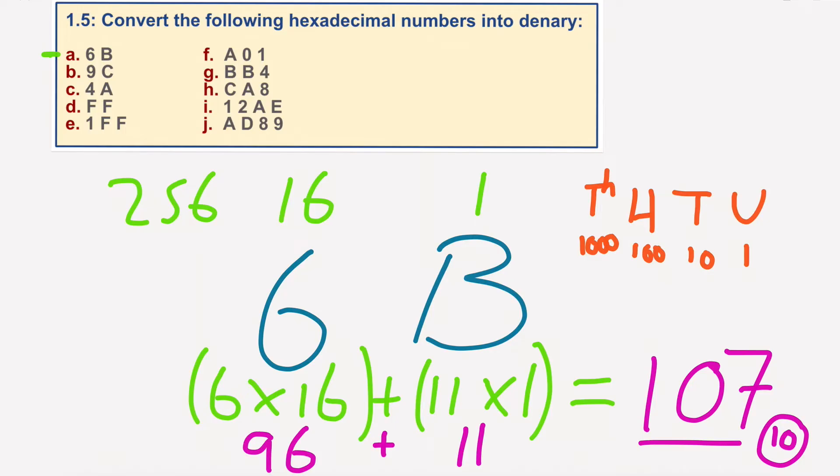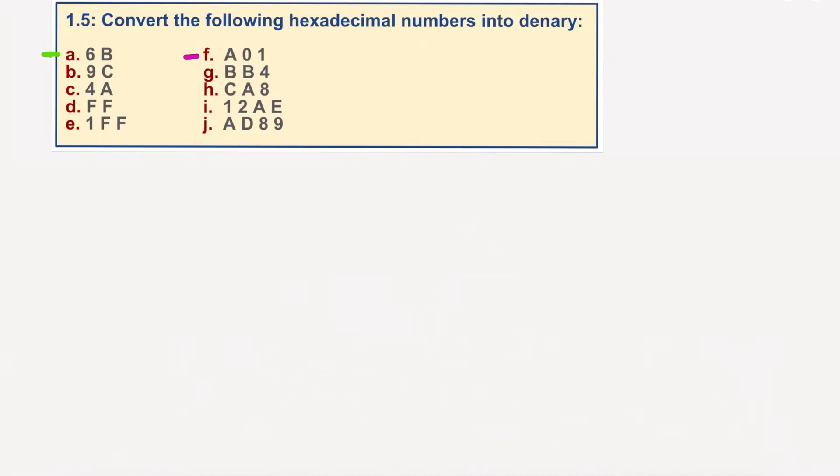A01. I'm going to move on to F. So let's rub this out. So I have A01. That is 1 lot of 1, no lots of 16, and A lots of 256.